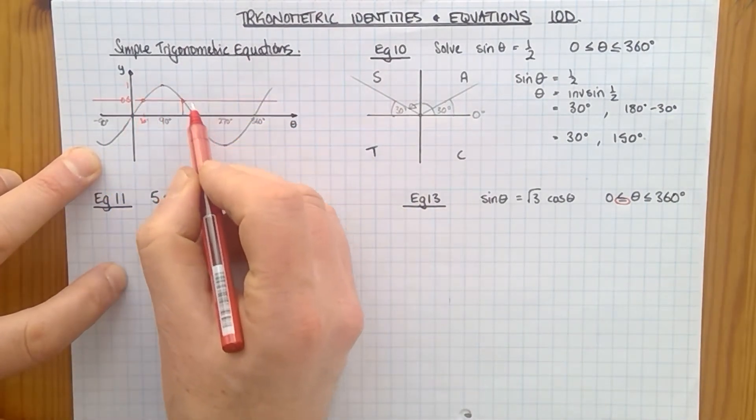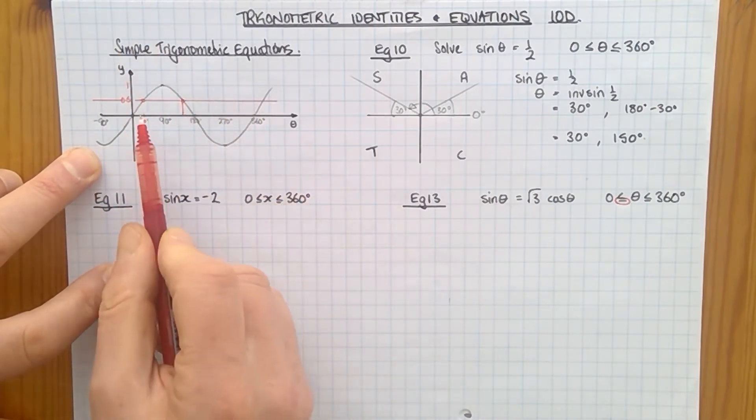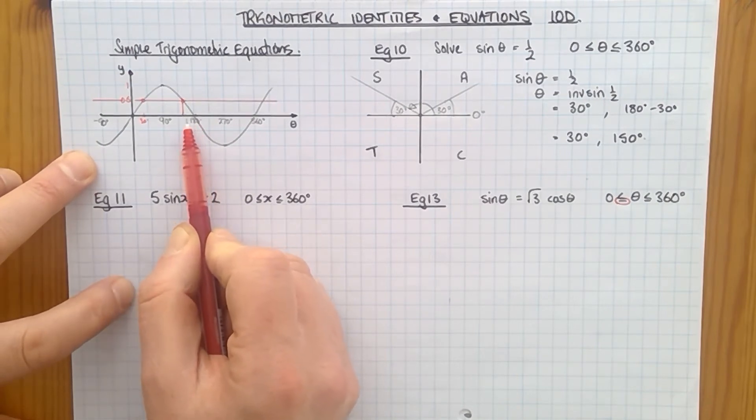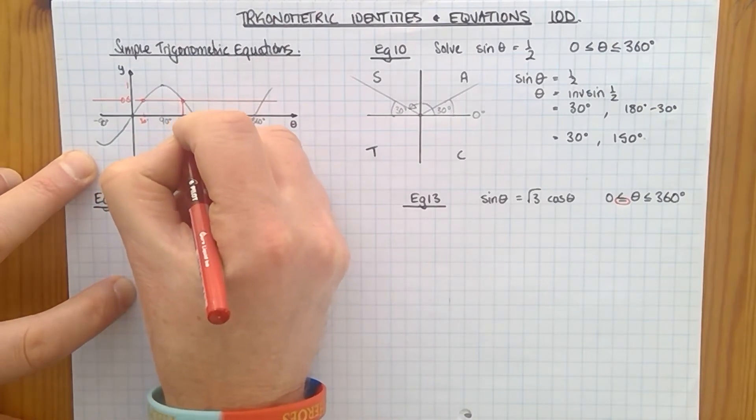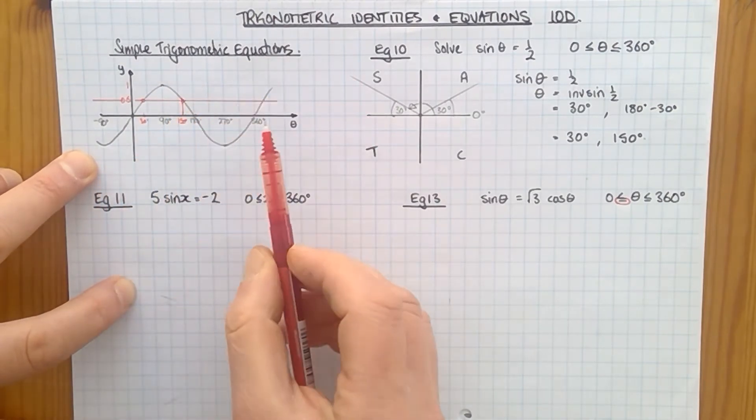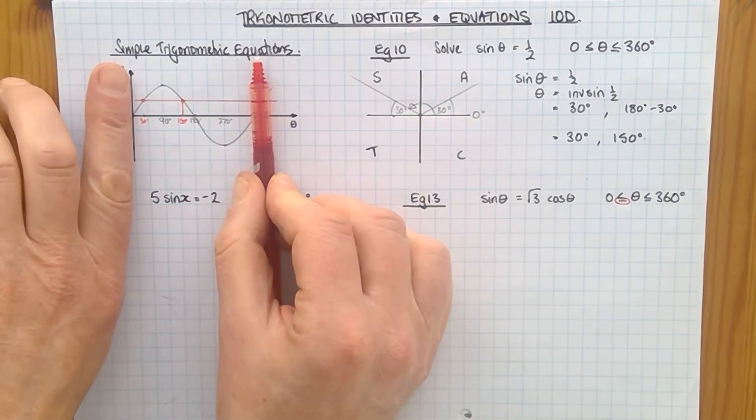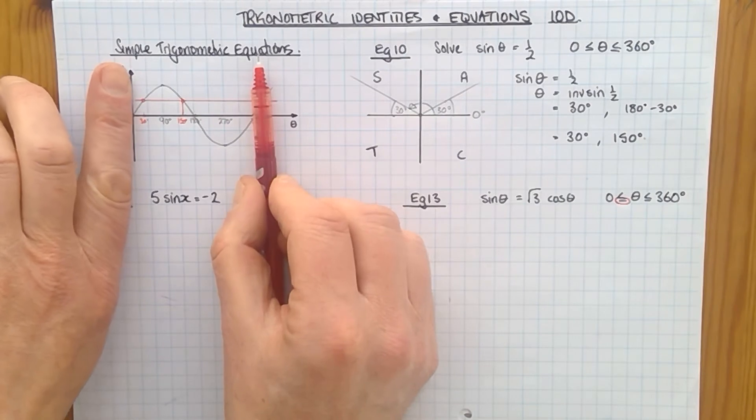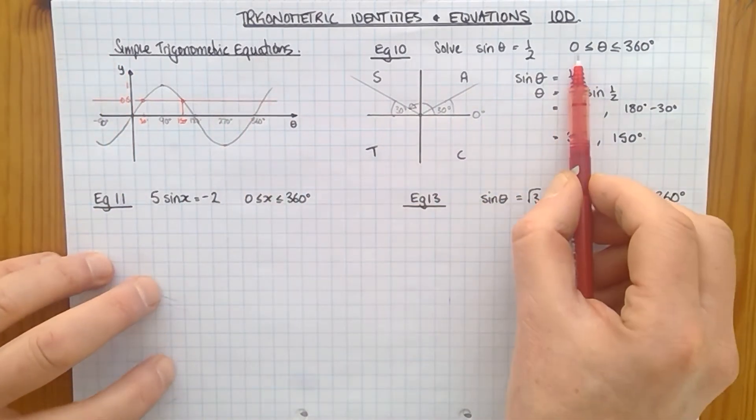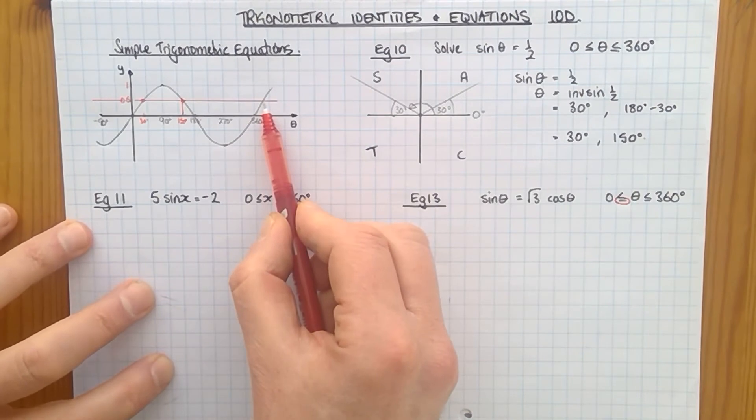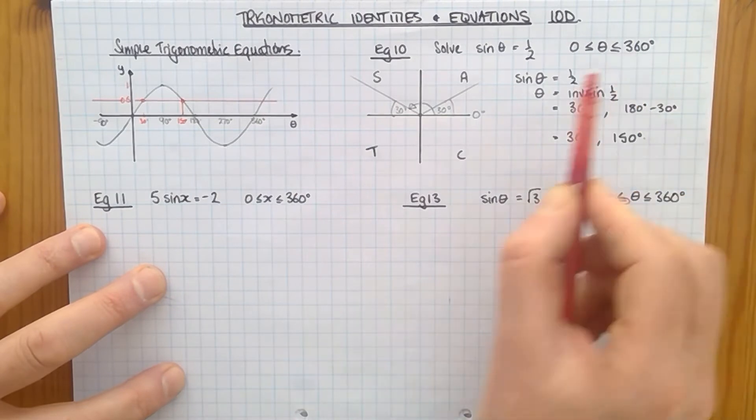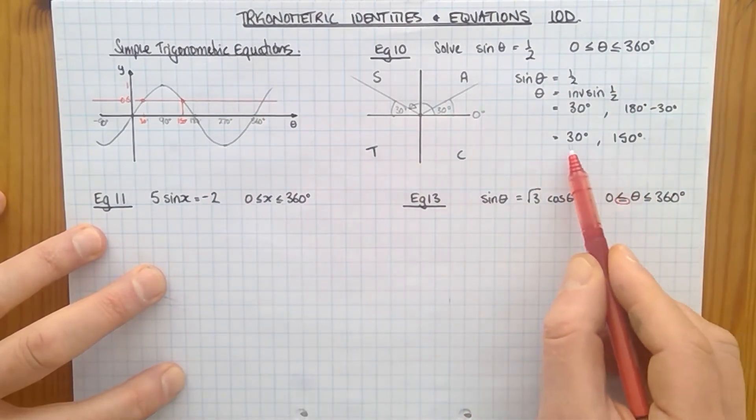But here's another place where they cross. And due to the symmetry of the graph around 90 degrees, if this is 30 degrees, then this has to be 30 degrees. So we can see on our graph that this value is 180 take away the 30, which is 150. Within our range of 0 to 360, there are no other places where that red line crosses the sine curve. If I was to extend my range, you can see there'd be another one there just beyond 360. Actually, that would be at 390. But 390 is not in our range. So those are our two values.